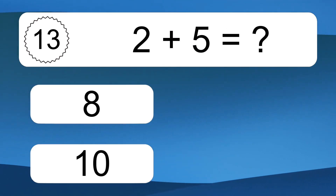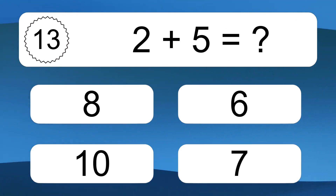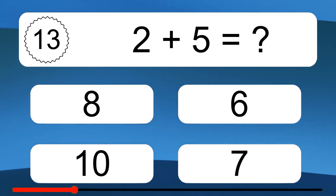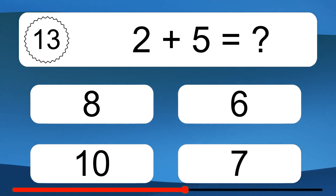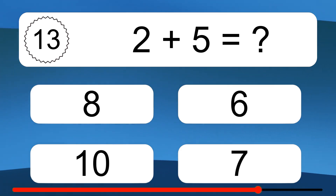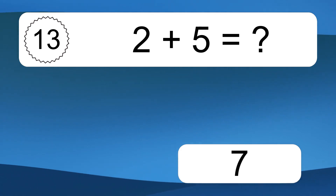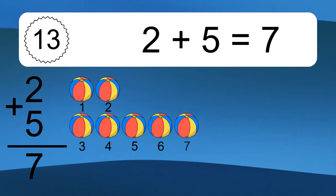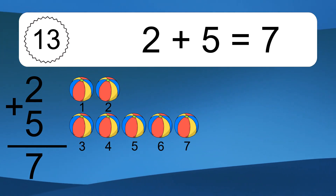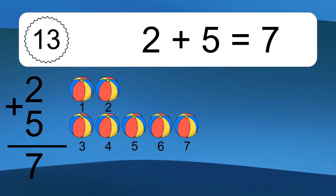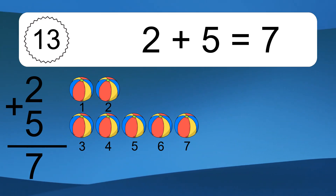2 plus 5 equals what? 2 plus 5 equals 7. Let's count it. 1, 2, 3, 4, 5, 6, 7.